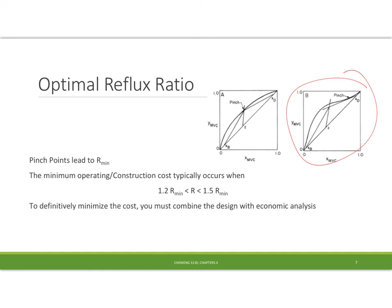Now we're going to find the pinch point, so we're going to draw the line with the slope that is going to be the smallest that just barely touches that line. That's going to give us our R minimum. And it's going to turn out that I'm going to minimize my cost when I combine both looking at the cost of building the tower and operating it. That means I'm going to want to choose an R value typically between 1.2 and 1.5 times our minimum reflux ratio. In order to specifically minimize this I'm going to have to do some economic analysis, and we will be looking at this a little bit later in the semester.